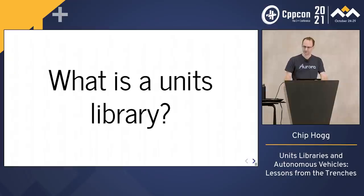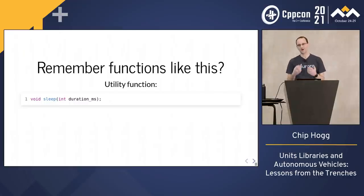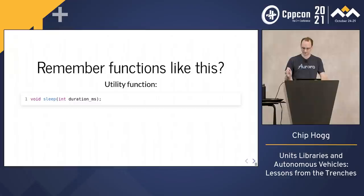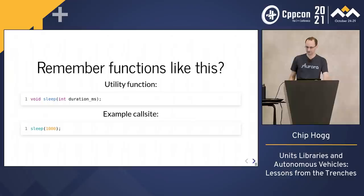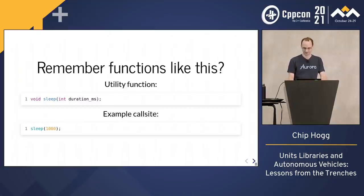So, what are we talking about? Let's start with an example of the kind of code we used to see all the time. We have a sleep function which takes a duration, and it helpfully labels the units for that duration as milliseconds. But when we read a call site in a random part of the code base, it just says sleep 1,000. 1,000 what? This kind of interface is a bug waiting to happen, and it typically doesn't wait very patiently.